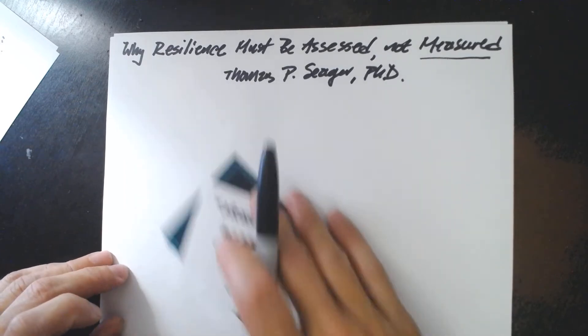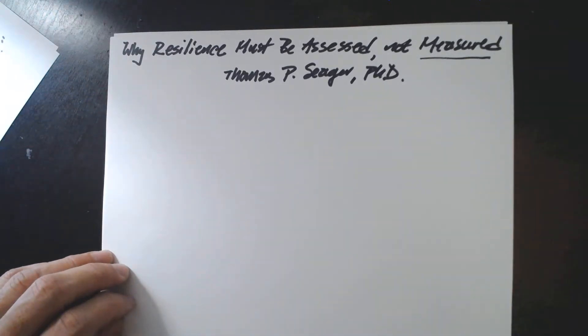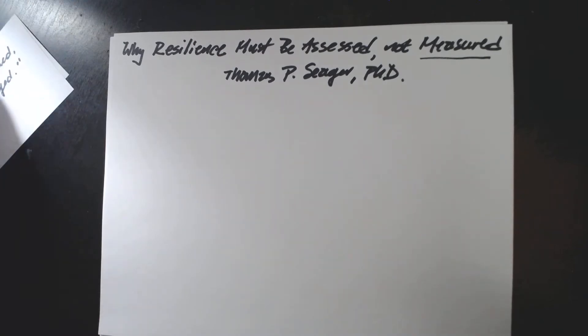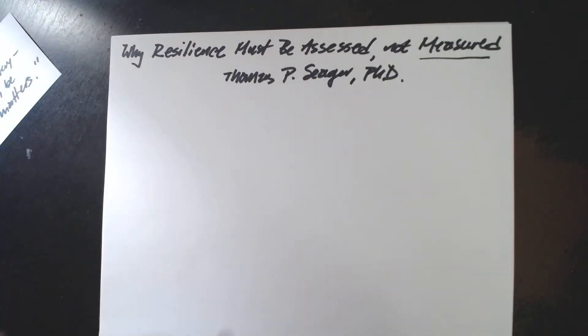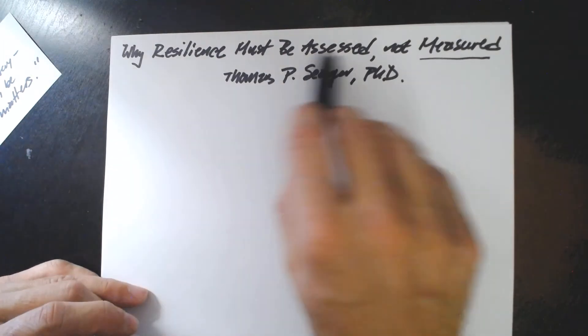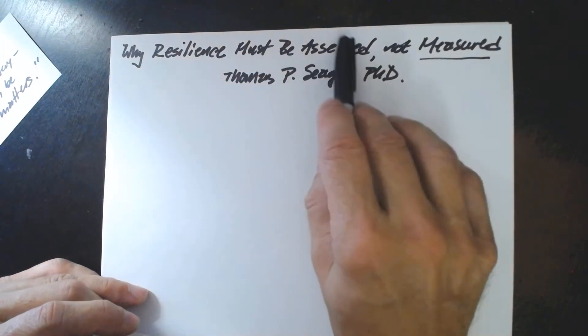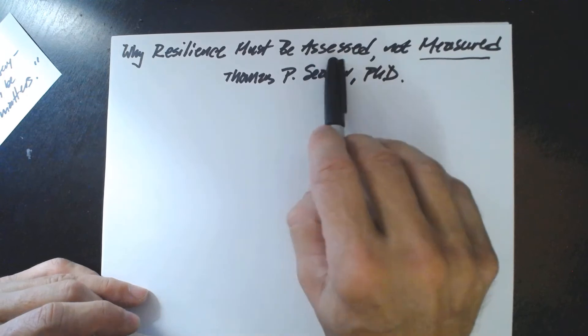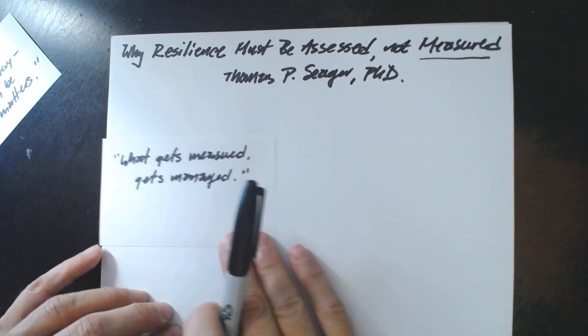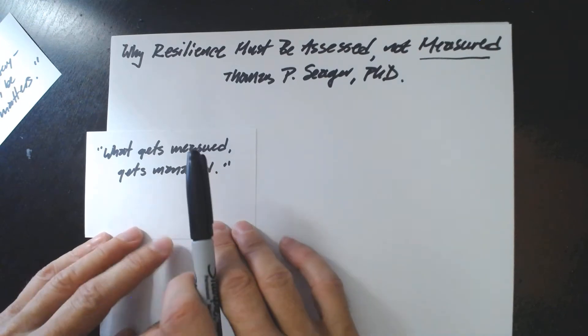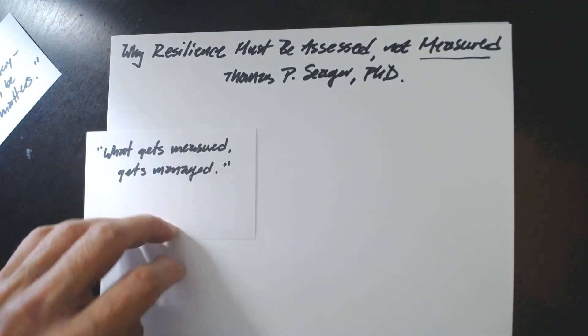So I'm going to start today with competing epigraphs. Although I don't really know who gave us these quotes. They're going to represent for us two different views of measurement and quantification. And then I'm going to make the argument why resilience must be assessed, described, understood, but not measured. The first of these is familiar to engineers and physical scientists everywhere. What gets measured gets managed.